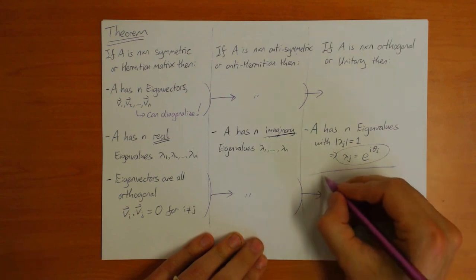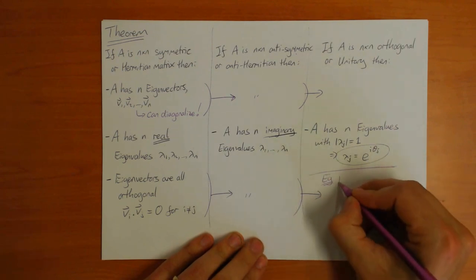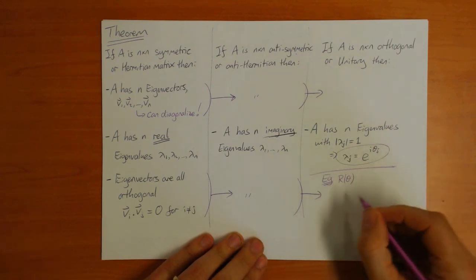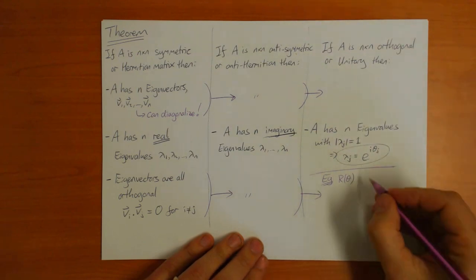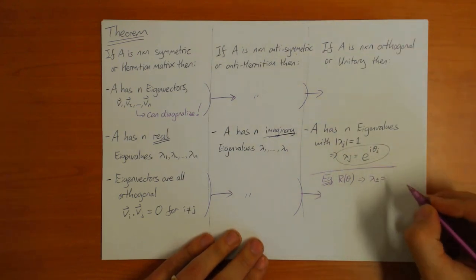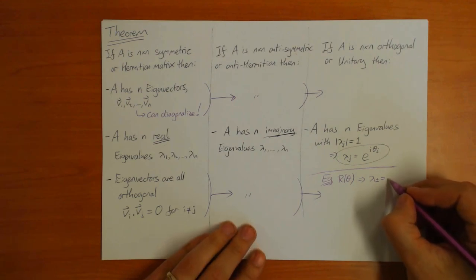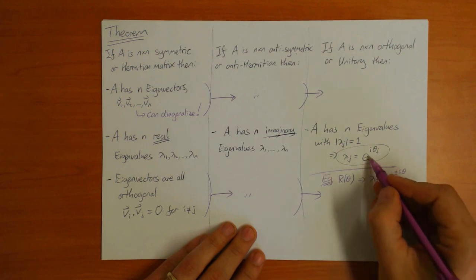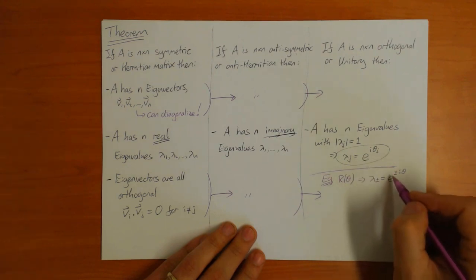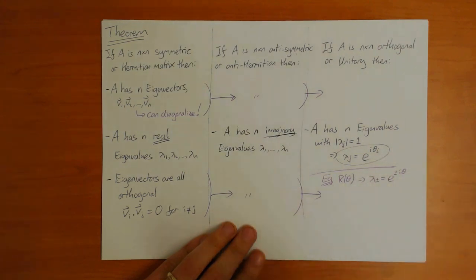So that's the theorem. As I said, I'll prove it in the last video. This one, though, I just want to say we've already seen an example of this. When we looked at the rotation matrix, that's an example of an orthogonal matrix. There we found that the eigenvalues were lambda plus minus, which were e to the plus or minus i theta. So exactly as stated here. They have length 1. They are complex numbers with length 1.